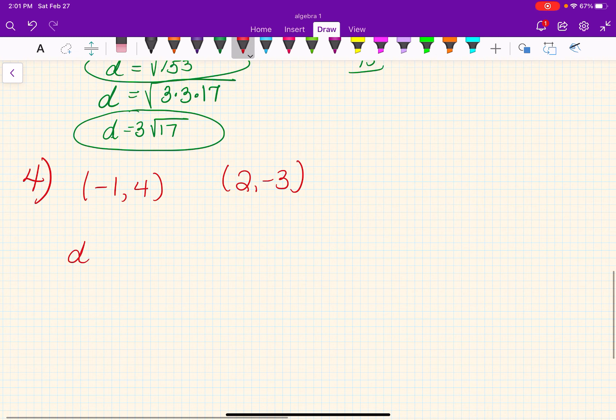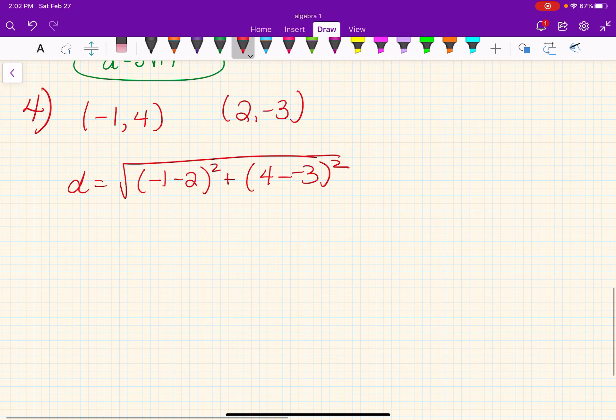So the distance is going to equal the square root of negative 1 minus 2 squared plus 4 minus negative 3 squared. Again, this isn't the most difficult, but there's a lot of places to mess up your negative. So just be really careful with that.